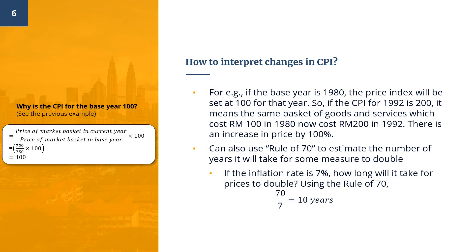Moving on to interpreting the changes in CPI. If the base year is 1980, the price index for the base year is 100. If the CPI for 1992 is 200, that means the same basket of goods and services which cost RM100 in 1980 now costs RM200 in 1992 — an increase in price of 100%. In our previous example, the percentage change in CPI from 2019 to 2020 was 1.67%, meaning we have an inflation rate of 1.67% and the price of goods and services increased by about 1.7%.